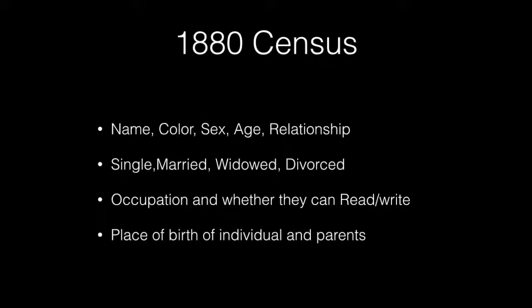The 1880 Census shows the name, color, sex, age, and the relationship, which makes it very useful. It also shows whether the individual is single, married, widowed, or divorced, the occupation, whether they can read and write, and the place of birth of the individual and his parents.